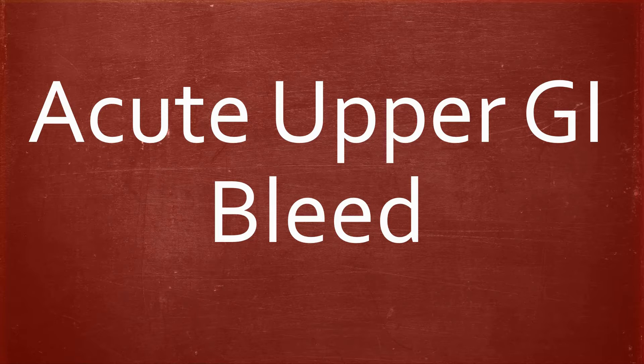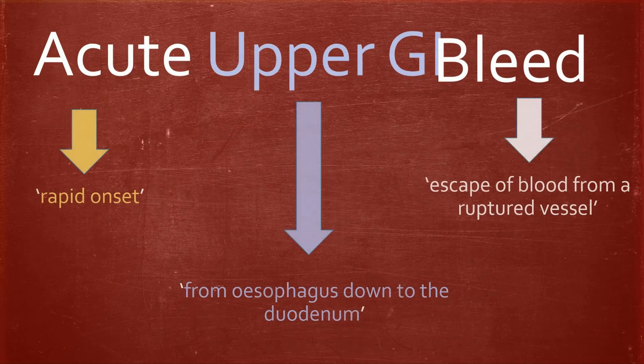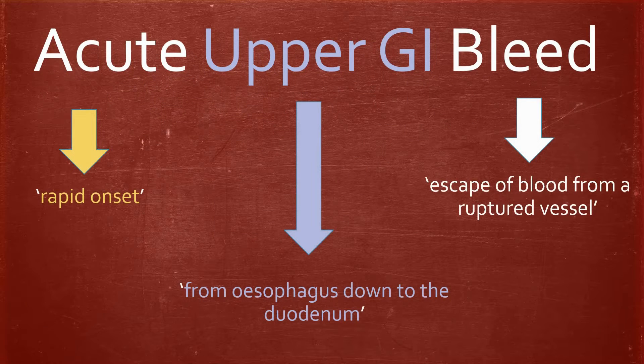Management of Acute Upper GI Bleed. This is defined as acute, meaning rapid onset, upper GI, which refers to the esophagus down to the duodenum, and bleed, which is defined as an escape of blood from a ruptured vessel.